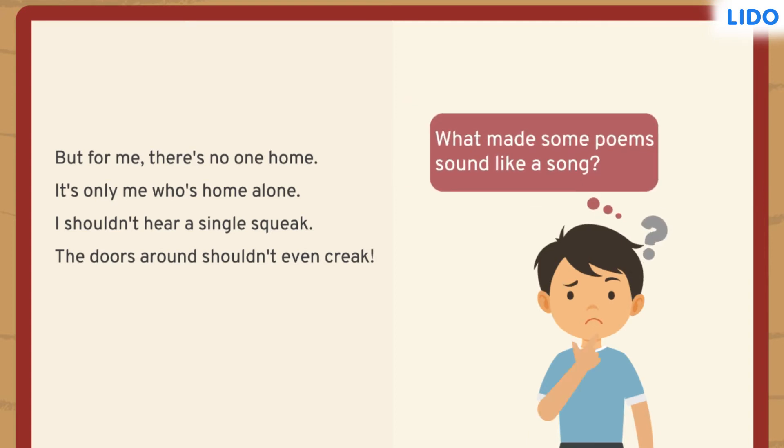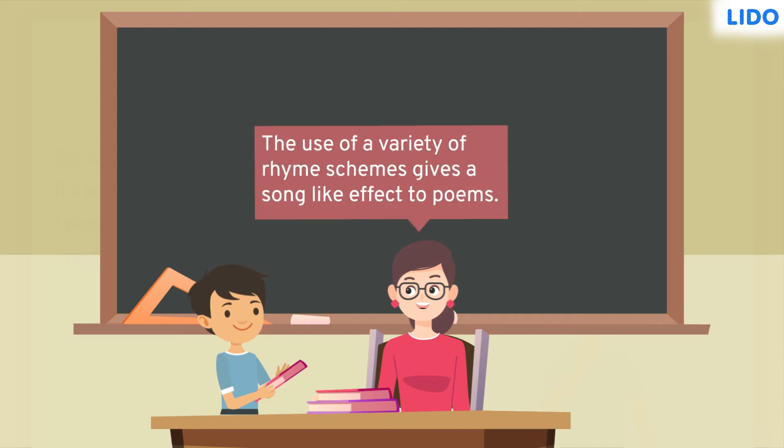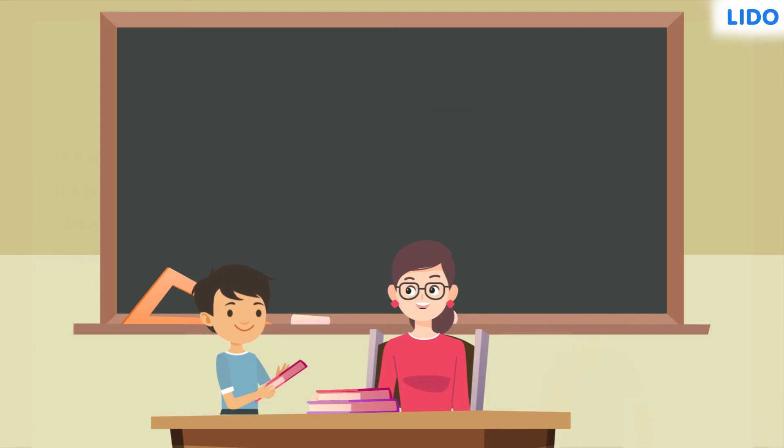He wondered what made some poems sound like a song. He went up to his English teacher and shared his doubt. She explained that the use of a variety of rhyme schemes give a song-like effect to poems. But Vikram did not know what his teacher meant by rhyme schemes. He asked her for more explanation.